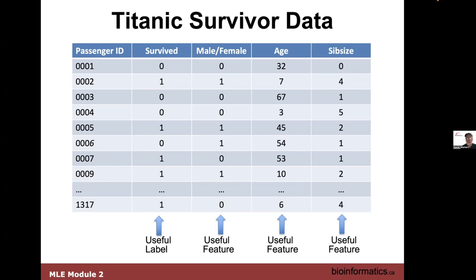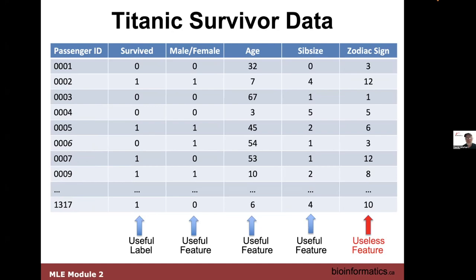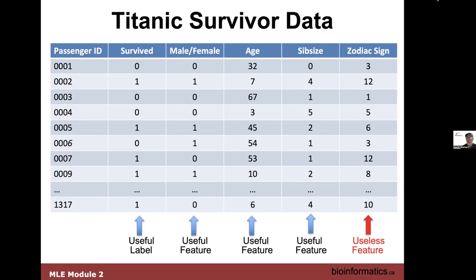We have some categorical features and numeric features. In some cases the data is completely useless — for example, choosing the zodiac sign or month of birth probably had nothing to do with whether you survived. So sex, age, and family size were useful features, while zodiac sign is a useless feature.